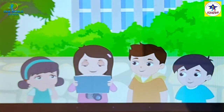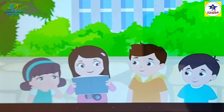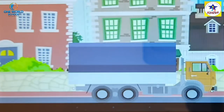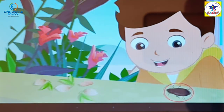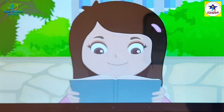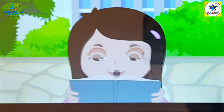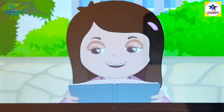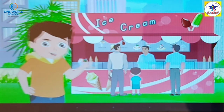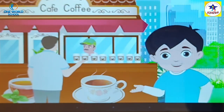The next set of words is big and small. The building and the truck are big. The beetle and the nut are small. Next, we have to tell which objects are hot and which are cold. The ice cream is cold. And the coffee is hot.